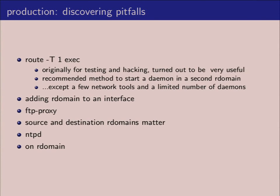There was a short period of time where we made a push to add very specific routing domain support into all of the tools that had any sort of network access — for example, adding rdomain support natively within SSH or various other tools. We later realized it was much better to add it simply within the route exec command and use that as a tool going forward, instead of trying to add it for every single daemon or tool. We decided only the specific network tools that have to know about routing domains — basically anything that sets or checks a route — have native support, but everything else you should be using route exec.